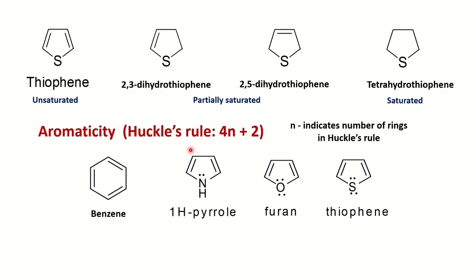Pyrrole, furan, and thiophene are all aromatic in nature. As with benzene, they obey Hückel's rule (4n+2 π electrons). Benzene has one ring with six π electrons. Pyrrole, furan, and thiophene have only two π bonds (four electrons), but the lone pair of electrons on the heteroatom delocalizes into the ring, giving a total of six π electrons and making these compounds aromatic.